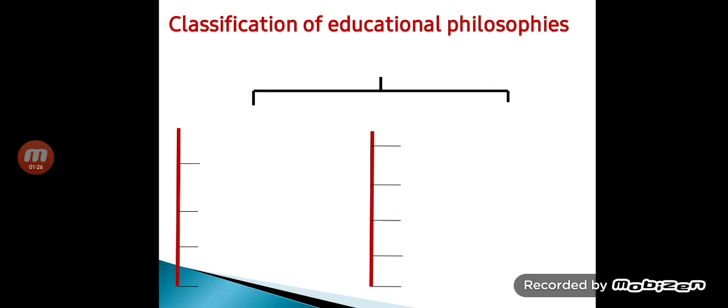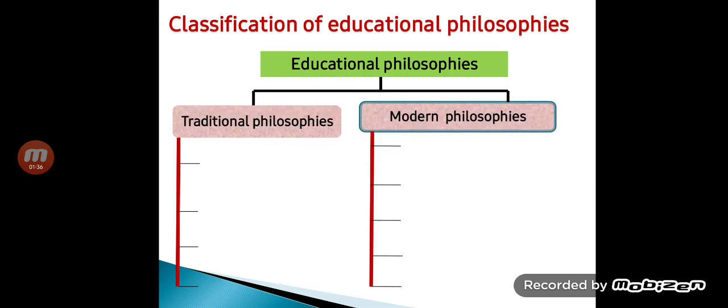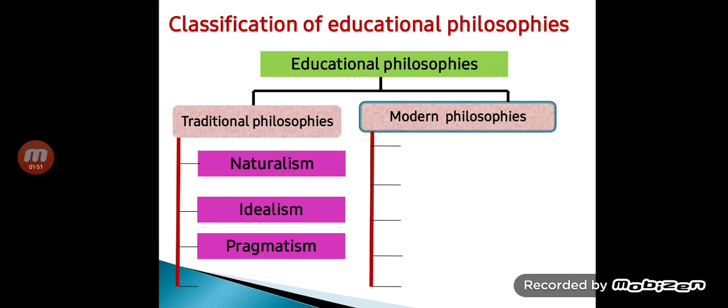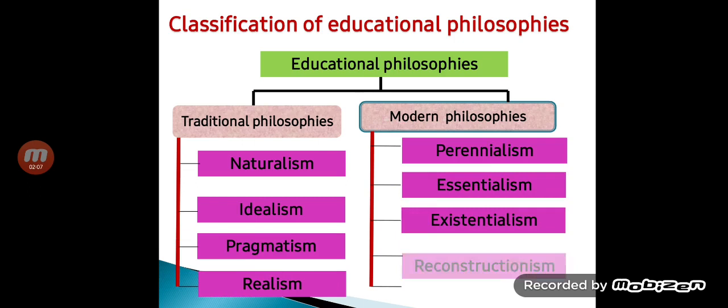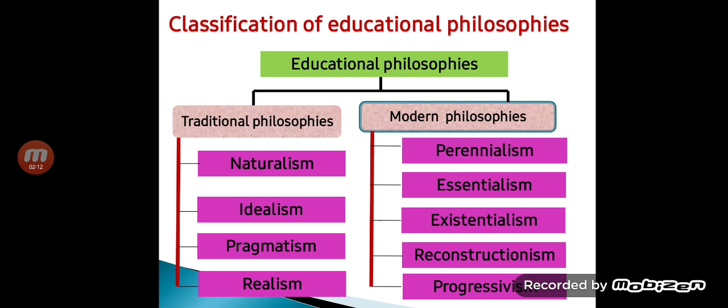Now let's see the classification of educational philosophies. Educational philosophies are classified into two types: traditional philosophies and modern philosophies. Traditional philosophies are further divided into four types — naturalism, idealism, pragmatism, and realism. Modern philosophies are divided into five types — perennialism, essentialism, existentialism, reconstructionism, and progressivism.